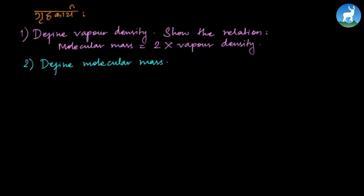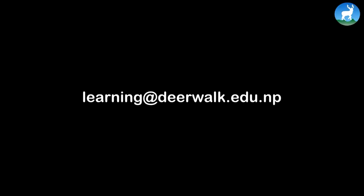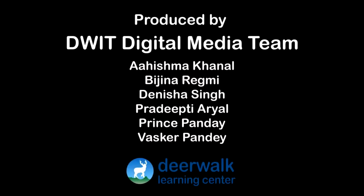Today's lesson covered: define vapor density, show the relation molecular mass equals 2 times vapor density, and determine atomicity. To complete today's classwork, define molecular mass and vapor density and derive the relation. Thank you for learning at work.edu.np.